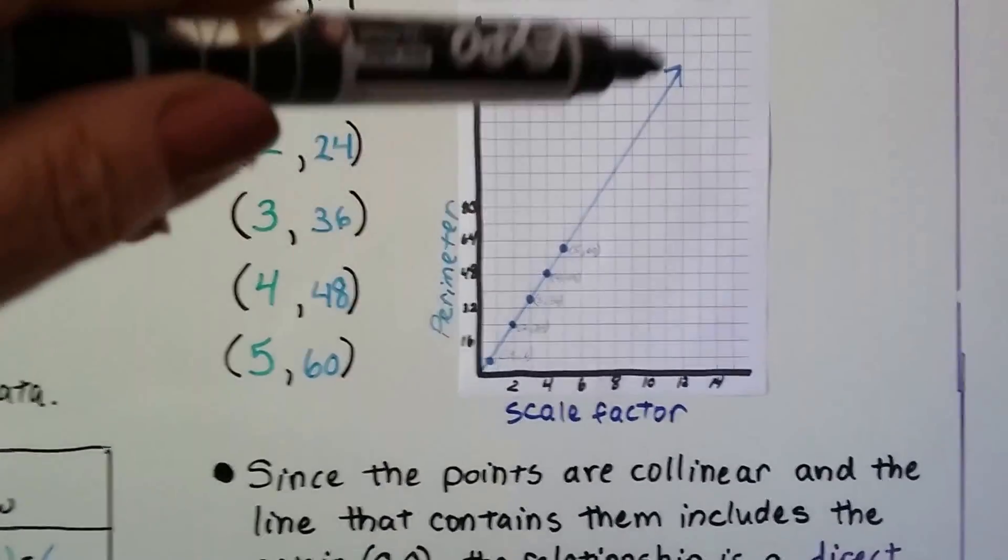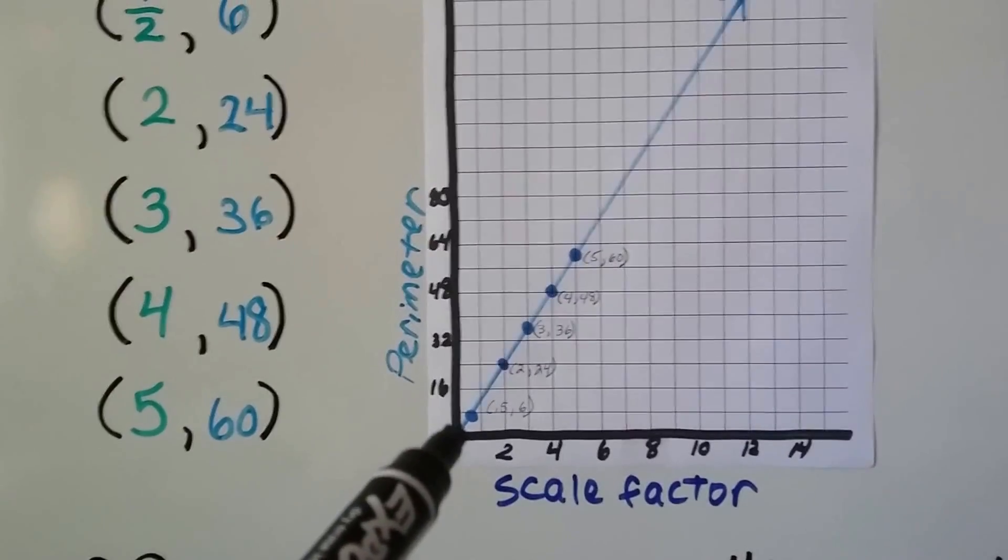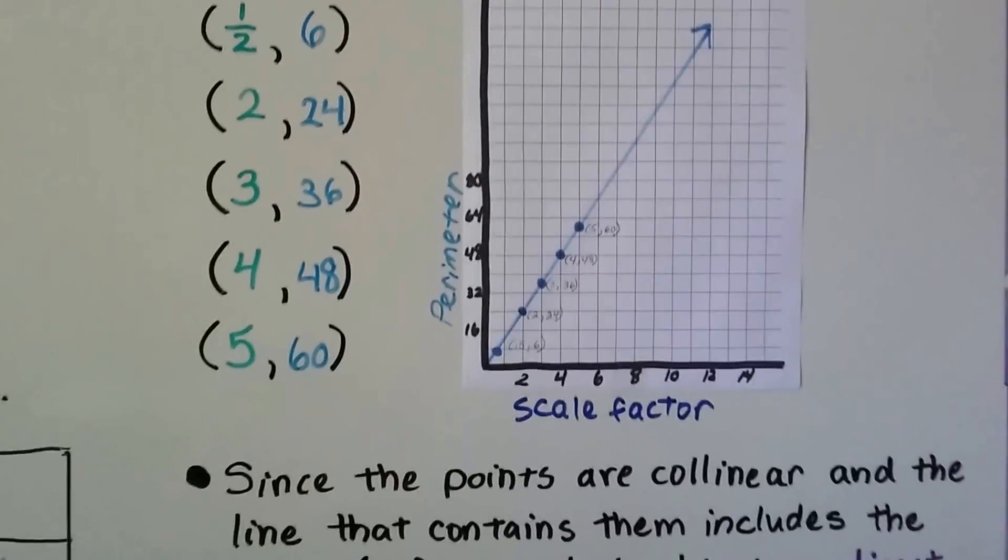And we graph it. We graph half and 6 down here, 2 and 24, 3 and 36, 4 and 48, 5 and 60. And do you see what it's doing?